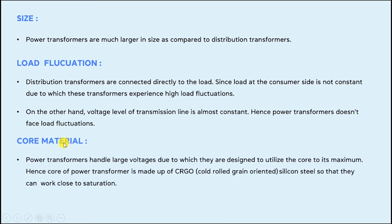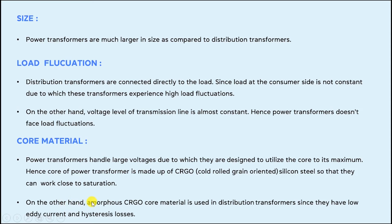The next point is the core material. Power transformers handle large voltages, so they are designed to utilize the core to its maximum value. The core of a power transformer is made of CRGO — cold-rolled grain-oriented silicon steel — so that they can work close to the saturation point. In distribution transformers, amorphous CRGO core material is used since it has no eddy current and hysteresis losses. Amorphous core material is not used in large transformers like power transformers due to its mechanical weakness.